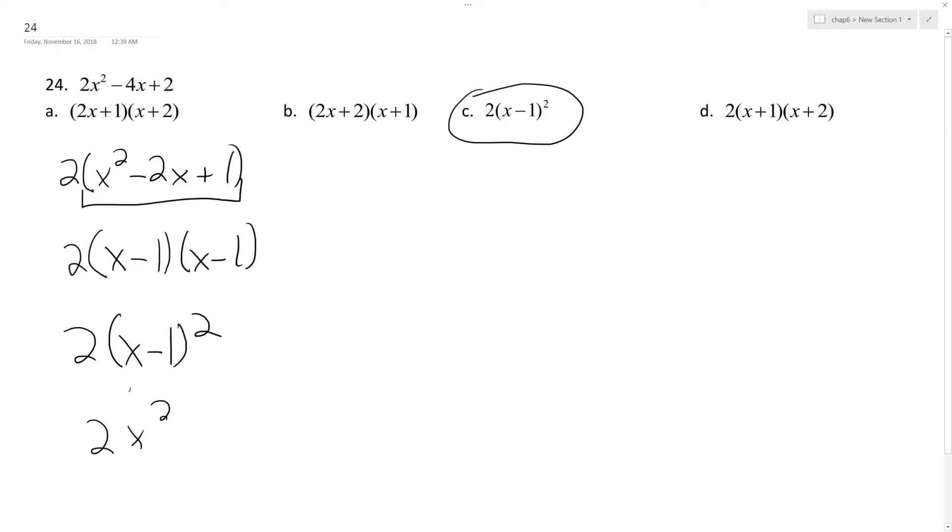So I end up with 2 times quantity x squared minus x minus x plus 1 because negative 1 times negative 1. So I end up with 2 times x squared minus 2x plus 1.